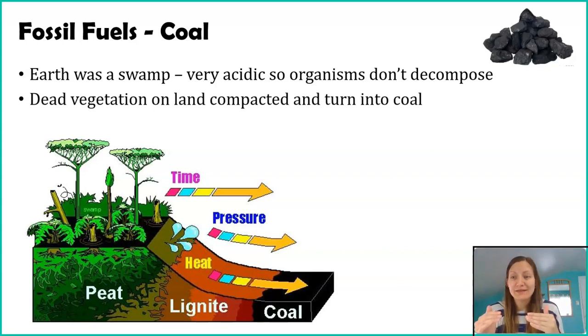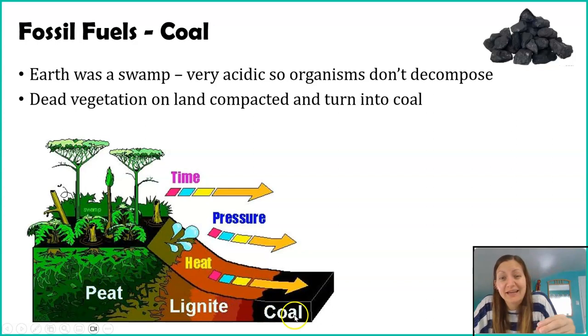And so what happens is this dead vegetation on land, and I specify this because our other types of fossil fuels are formed differently. For coal, it's dead vegetation that's on land, it dies, it doesn't decompose. And as it layers and compacts, and you add a couple hundred million years, what you start seeing is this vegetation turning into peat, turning into lignite, and add enough heat, add enough pressure, and add enough time, you get coal.